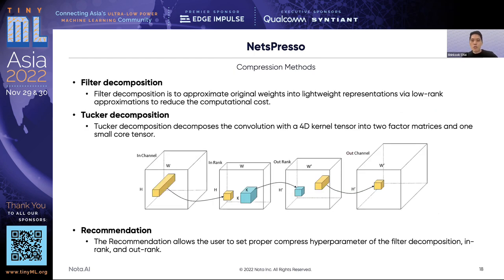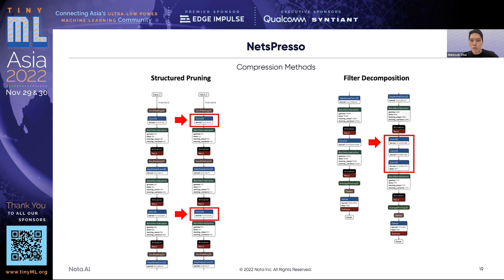Model compressor also supports filter decomposition as another compression method. Filter decomposition approximates original weights into a lightweight representation via low-rank approximations to reduce computational cost. For example, Tucker decomposition decomposes the convolution with two vector matrices and one small core tensor, and the recommendation easily assigns the proper rank ratio for each layer. These examples show results after applying structured pruning and filter decomposition — structured pruning removes filters, and filter decomposition decomposes one convolution into three layers.